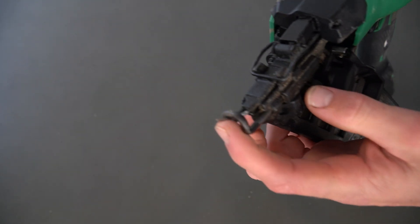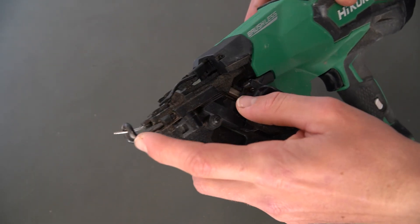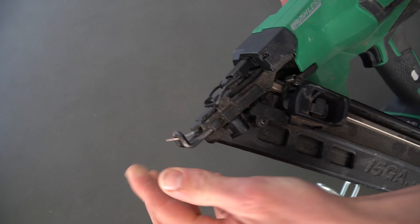All right, so I'm going to show you how to clear a jammed nail in a Hikoki fixer. You can see at the end here, we do have a nail sticking out, which is currently jammed in the gun.